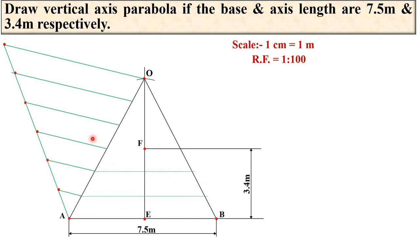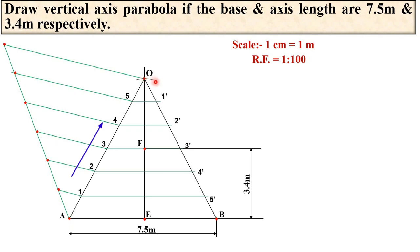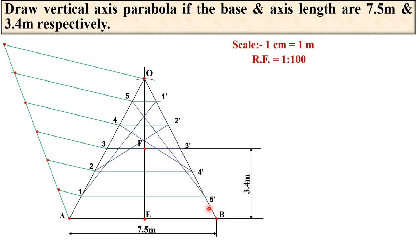Draw horizontal lines to divide OB into the same number of equal parts. Mark the points 1, 2, 3, 4, 5, and 6 on OA, and the corresponding points 1′, 2′, 3′, 4′, and 5′ on OB. The numbering should be in ascending order on both sides.